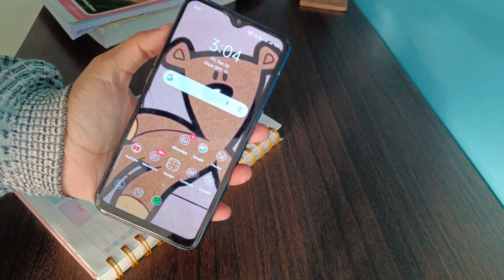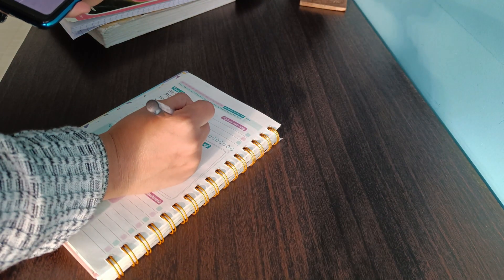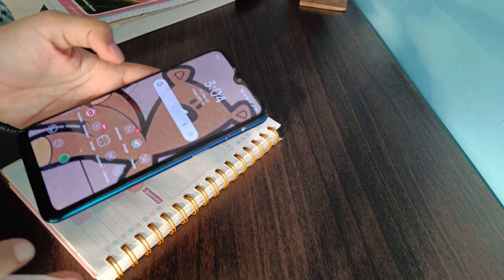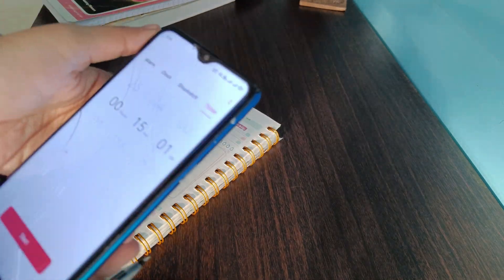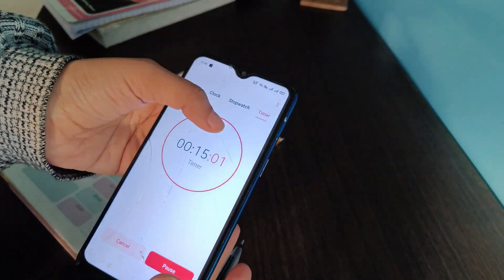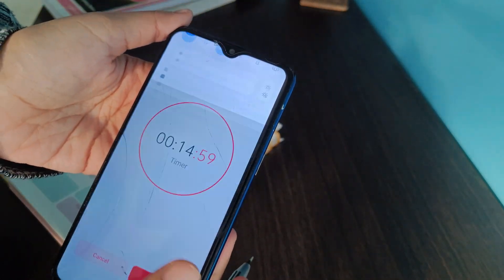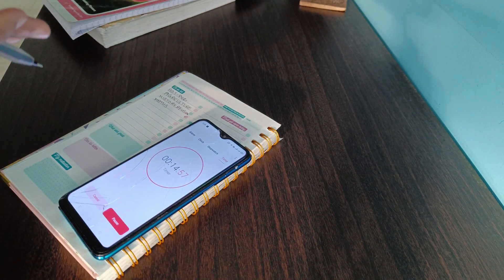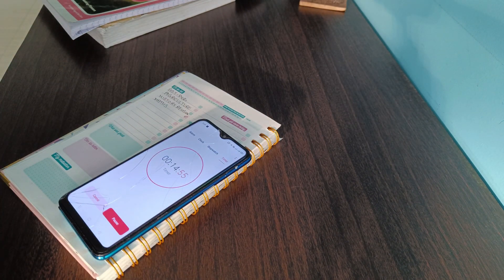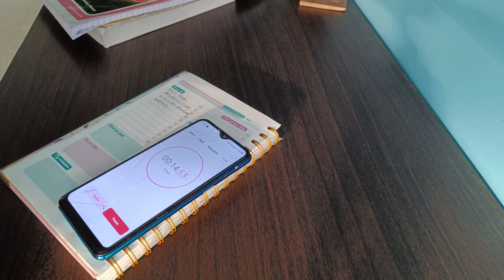So it is currently 3:04 and right now I'm done with my maths work for today. I will take a break of 15 minutes now. This timer will end at 3:19 PM. From 3:19 onwards I will start revising SST, most probably the chapter agriculture.